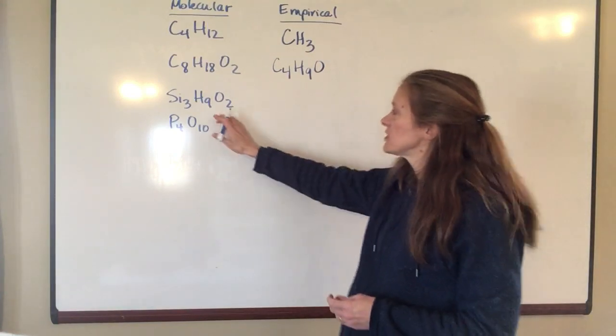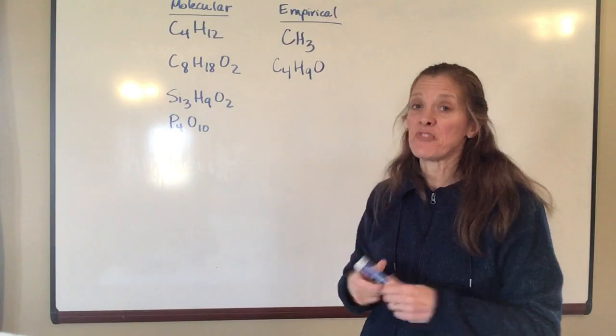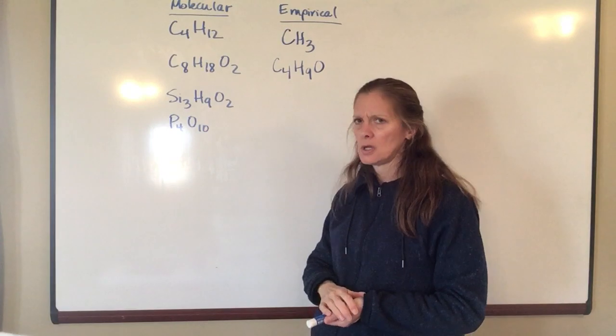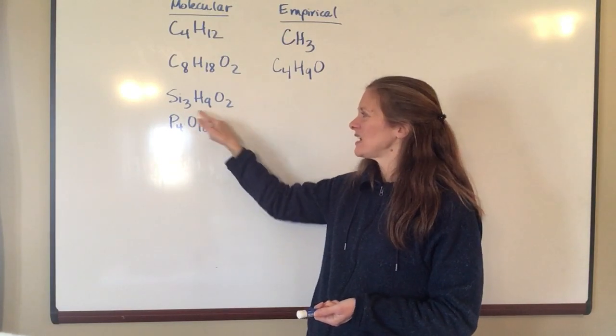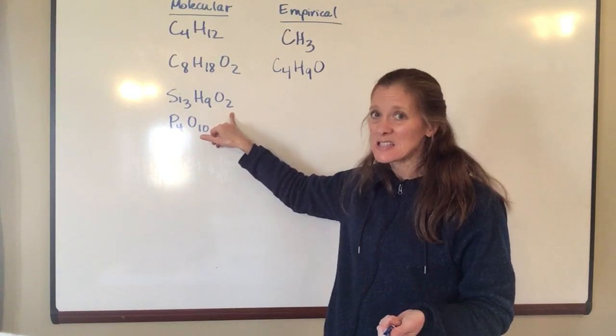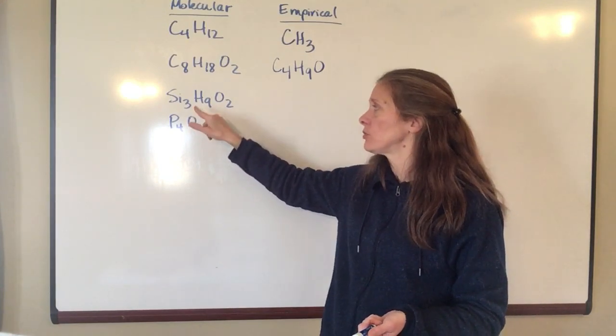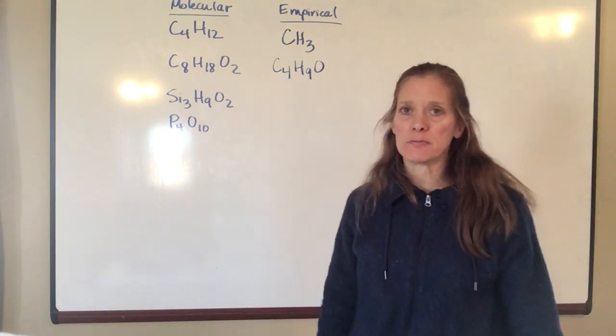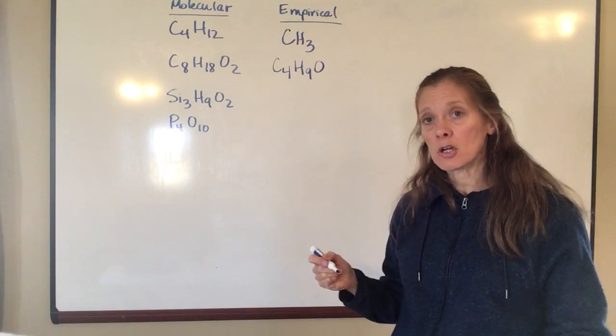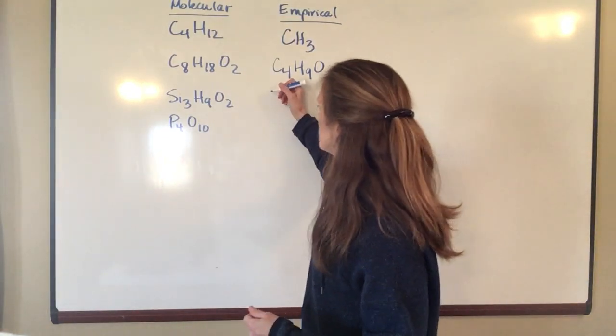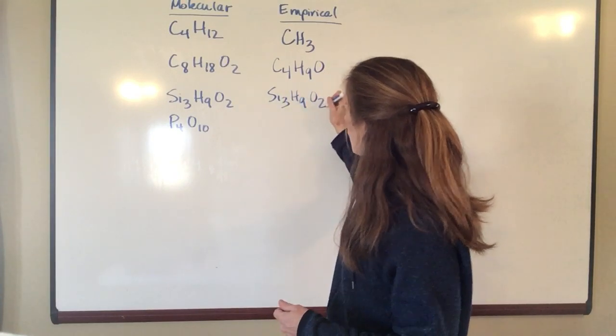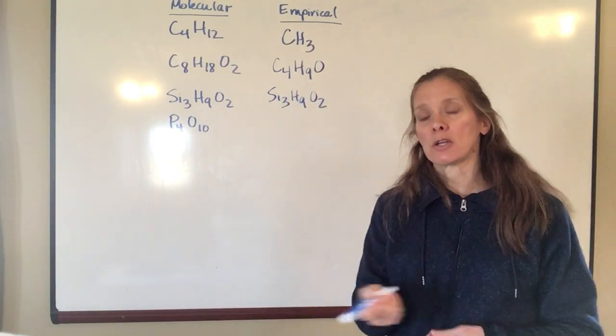Okay look at this next one. Si is silicon. It's in the same family as carbon. So I have Si3H9O2. Well the 3 and the 9 would reduce but I have a 2 and there isn't any single number that's going to go into 3, 9, and 2. There's no common factor there at all. So in this particular case, the empirical and the molecular formula are the same. So this one is still going to be Si3H9O2.